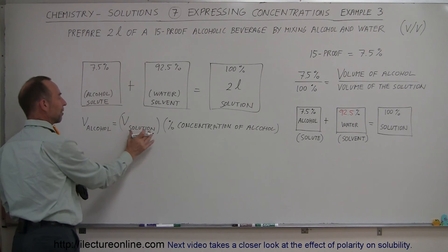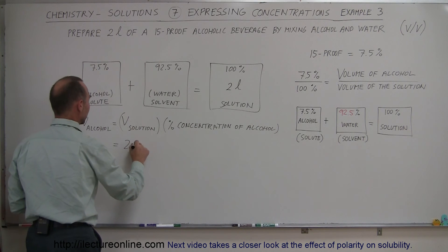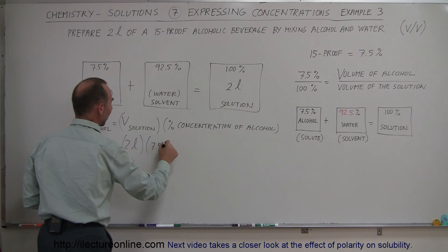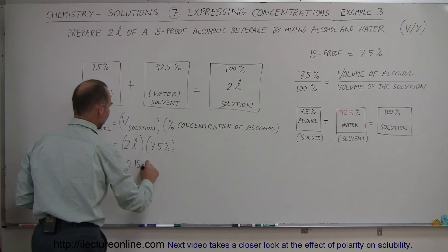To get the volume of alcohol, we take the volume of the total solution times the percent concentration of the alcohol. In this case, that's 2 liters times 7.5%, which equals 0.15 liters.